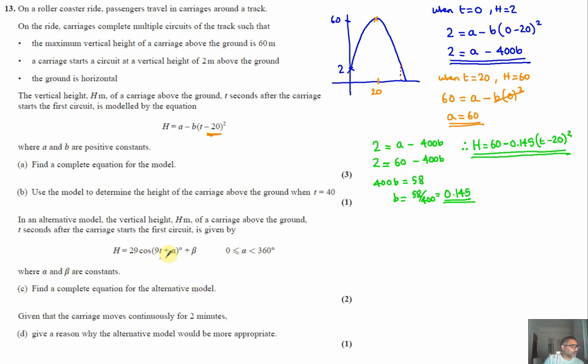Similarly to before, we need to think about this graph, what it would look like, and where it reaches its maximum and minimum points. From before, we know that the max point, the max h, is 60, and we know that occurs when t equals 20 seconds. So that's really useful in order for us to help work this out.